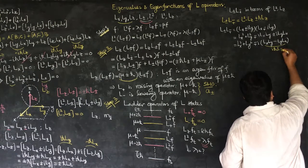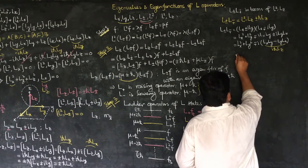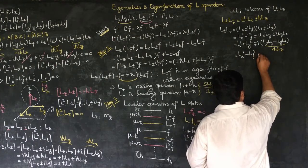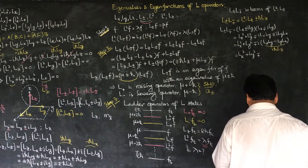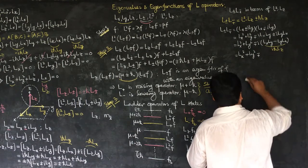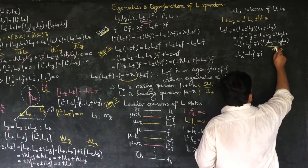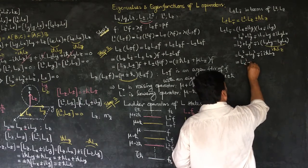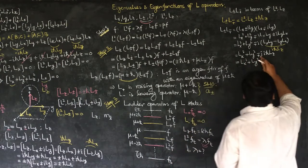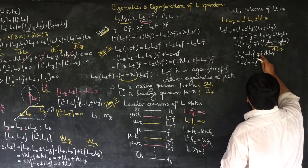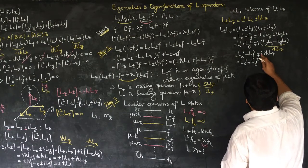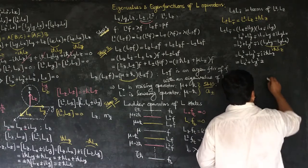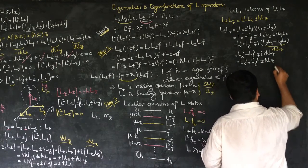So combining, we get Lx² + Ly² minus-plus i times iℏLz. Since i² equals -1, the minus-plus i times i gives plus-minus, so the result is Lx² + Ly² plus-minus ℏLz.